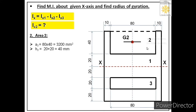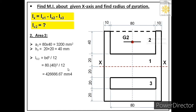To find Ig2 for Area 2, we apply bd³/12. The side parallel to the centroidal axis is 80 mm, so b = 80 and d = 40 mm. Thus Ig2 = 80 × 40³ / 12. Then applying the parallel axis theorem: Ix2 = Ig2 + A2·h2². We substitute the known values to get Ix2.